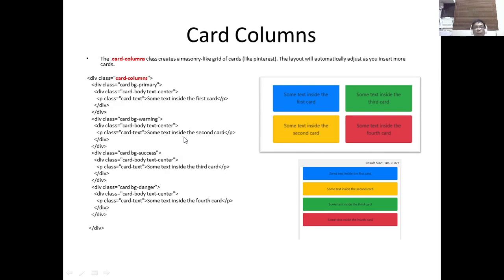We also have card columns, which creates a masonry-like grid of cards — similar to Pinterest. The layout automatically adjusts as you insert more cards. To demonstrate, we have four cards distinguished by bg-primary, bg-warning, bg-success, and bg-danger. If you make the screen width narrower, the output becomes a single column.